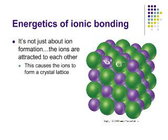The answer is that the formation of the ions isn't the whole story. When we form the ions, they're oppositely charged, and oppositely charged ions are attracted to one another. This causes the ions to form a crystal lattice. I've got a picture of a sodium chloride crystal lattice here. You can see the alternating positive, negative, positive, negative pattern in this very tightly packed, rigid arrangement.